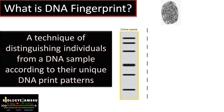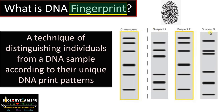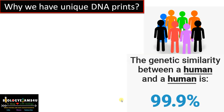Just as fingerprints are unique to an individual, DNA fingerprinting is a technique of distinguishing individuals from a DNA sample according to their unique DNA print patterns. This is a DNA fingerprint pattern isolated from a sample from a crime scene. By comparing the print pattern of suspects 1, 2, and 3, it is easy to identify the suspect — here suspect 2 has a similar print pattern, indicating their presence at the crime scene. This technique is widely used in forensic science.